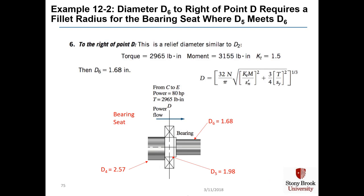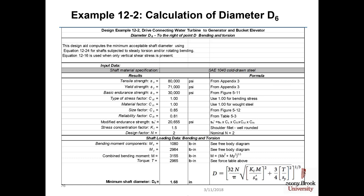Diameter D6 to the right of point D requires a fillet radius for the bearing seat where D5 meets D6 — also similar to the situation at point B. With KT equal to 1.5 and our torque and moment values, we get D6 equal to 1.68 inches, which is lower than D3 because KT is only 1.5 rather than 2.5.